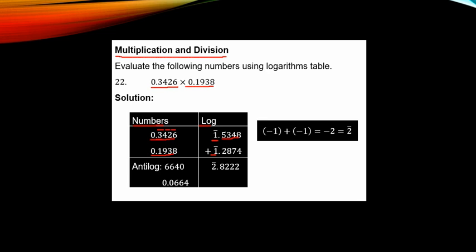For the second number 0.1938, you check 19 under 3, difference column. That gives mantissa 2874.